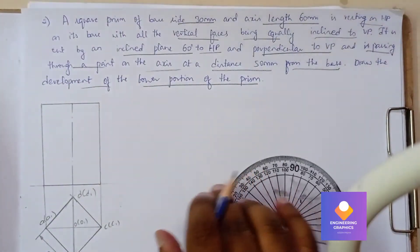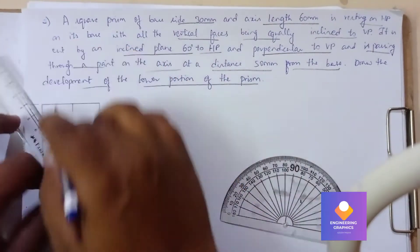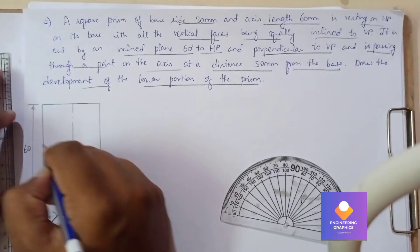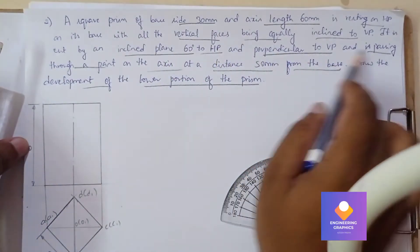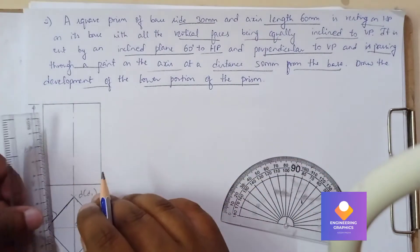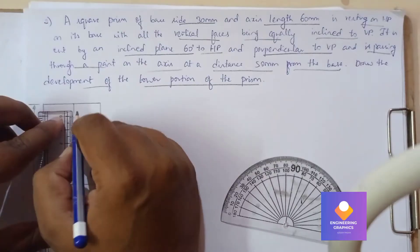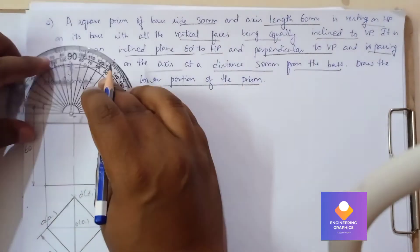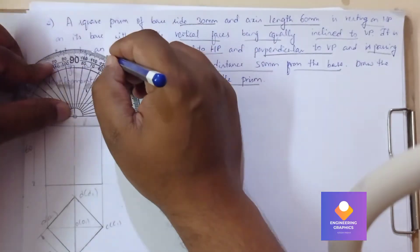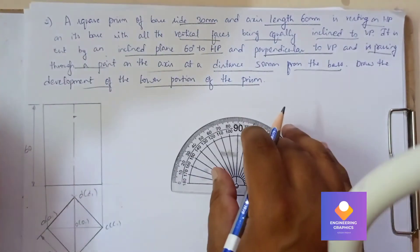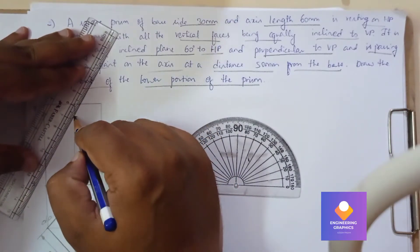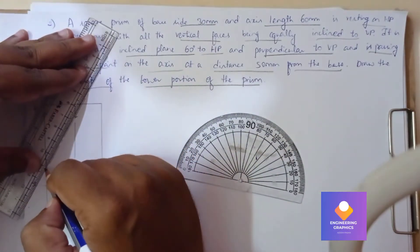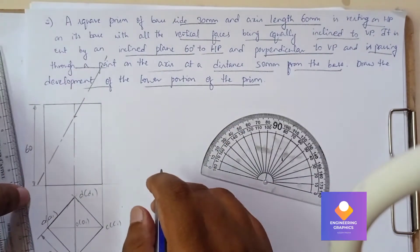Now we can see the inclined cutting plane. Show the dimension — the axis length is 60mm. The cutting plane is inclined at 60 degrees and cuts at a height of 50mm from the base. Mark a point at 50mm, take the protractor, mark for 60 degrees, and draw a line passing through that angle point, extending the cutting plane line.